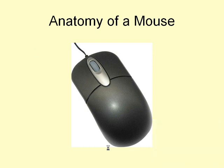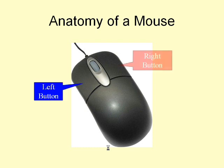There are many different styles of mouse, but most have at least two buttons. These are the left button and the right button, so called because they are on the left and right sides of the mouse.